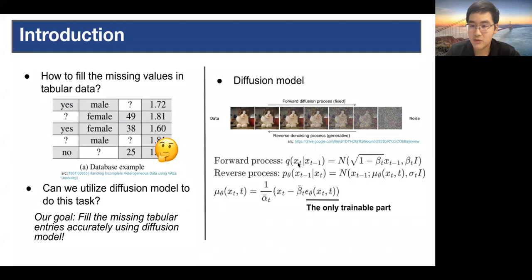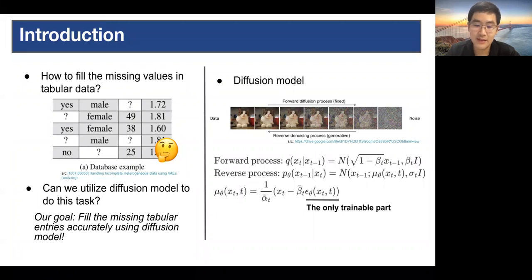A diffusion model contains two processes: one forward process with fixed parameters, which is responsible for encoding, and one reverse process with a trainable noise approximation function, which is responsible for decoding and data generation.